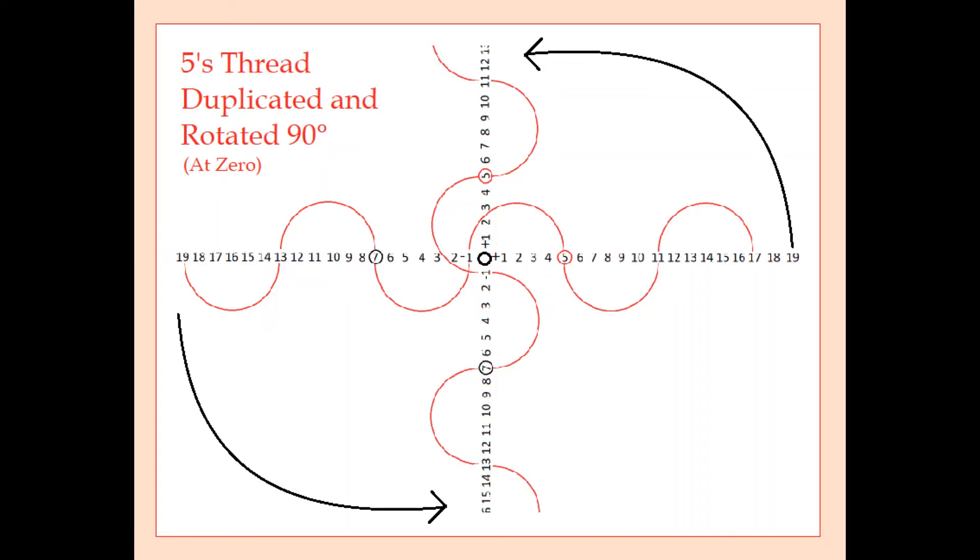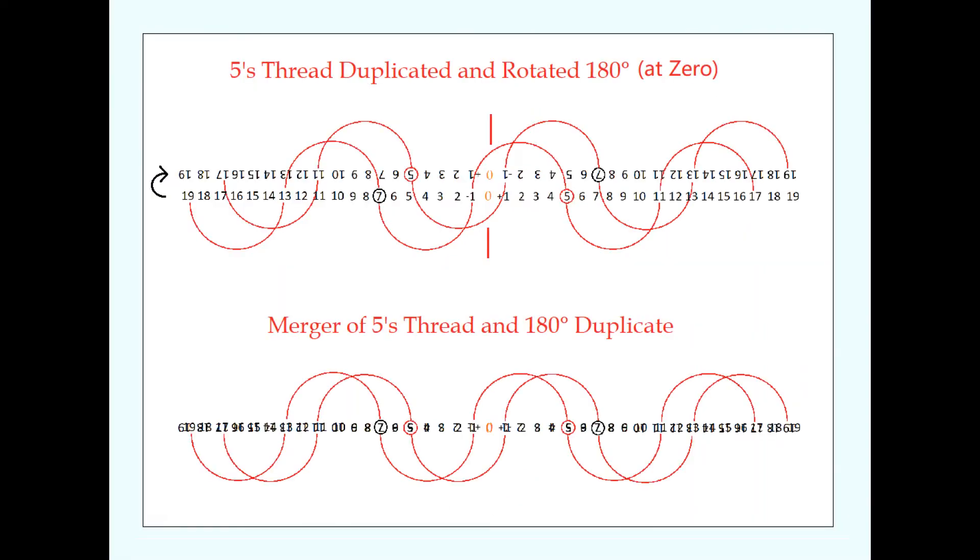Here's where it really gets interesting. Using 5's thread as an example, imagine duplicating and then rotating it at 0. If we continue the rotation through 180 degrees, the negative side of 5's thread moves into the positives, and the numbers fall perfectly into place.